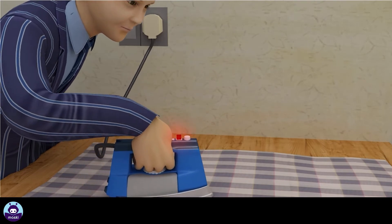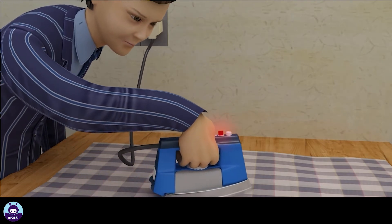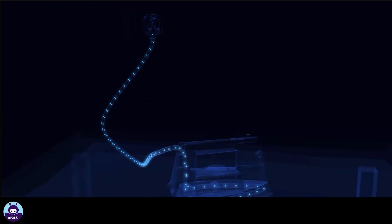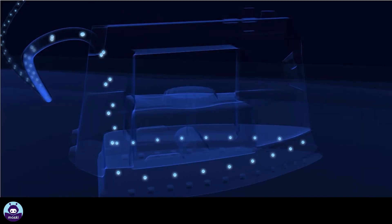One watt of power is the same as one joule of energy supplied or converted per second. This means that the electric iron converts 1000 joules of electrical energy to heat energy each second that it is turned on.